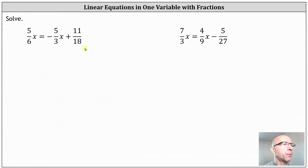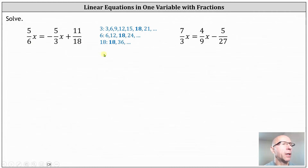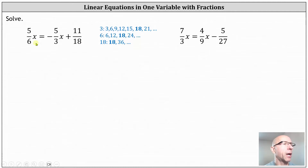Looking at our first equation, the least common denominator is the least common multiple of 6, 3, and 18. One way to find the least common denominator is to list out multiples of 6, 3, and 18 and determine the smallest number that is in all three lists. Here we can see the least common multiple, or least common denominator, is 18. This indicates that by multiplying both sides of the equation by 18, we can clear the fractions from the equation.